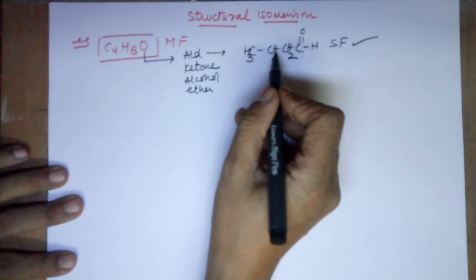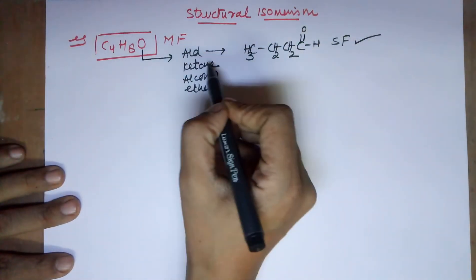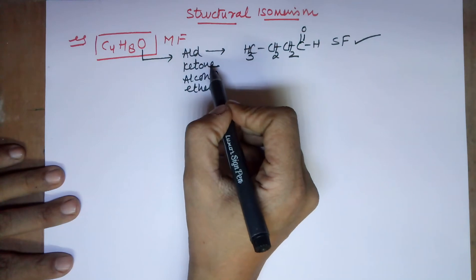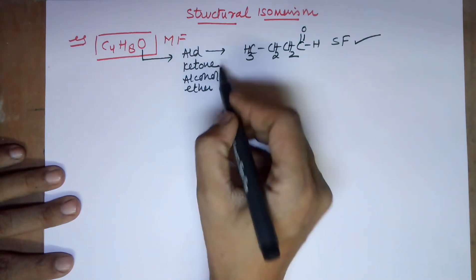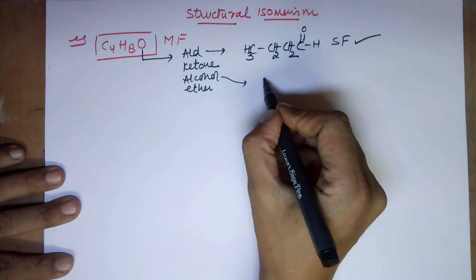A ketone can also be drawn from it because if a double bond O is the way the oxygen has to be. It could be a ketone also because ketone also has a double bond O. Can it be an alcohol? Let's try that out.